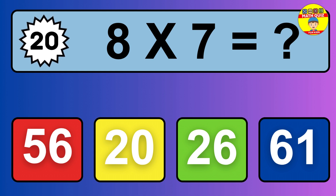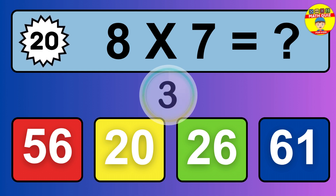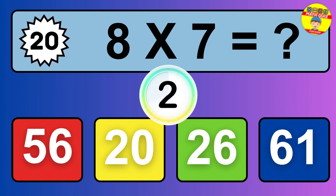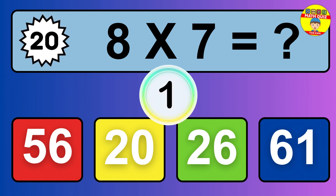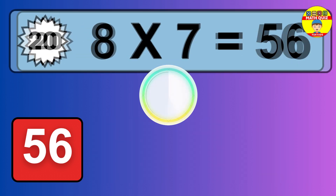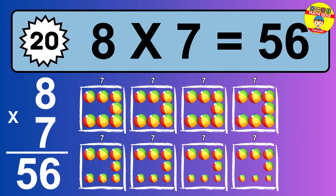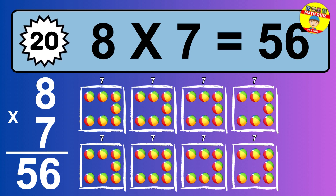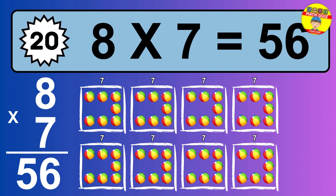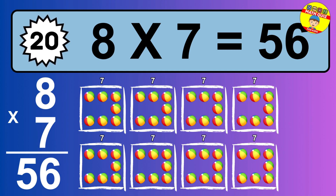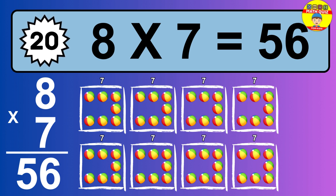Question 20. 8 times 7 equals what? The answer is 8 times 7 is 56. To calculate, we have 8 groups with 7 balls each one. So how many balls do we have? 56 balls.